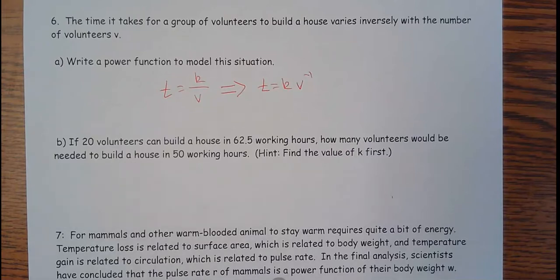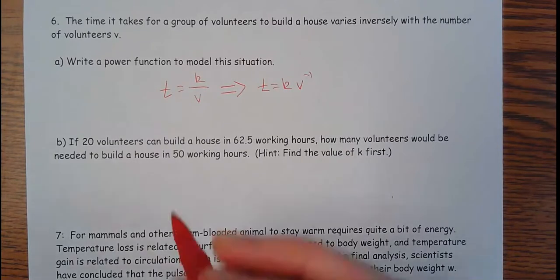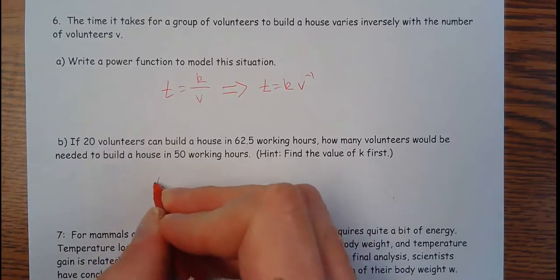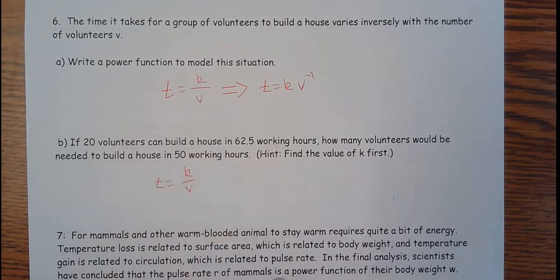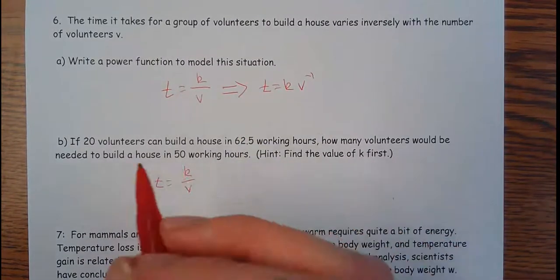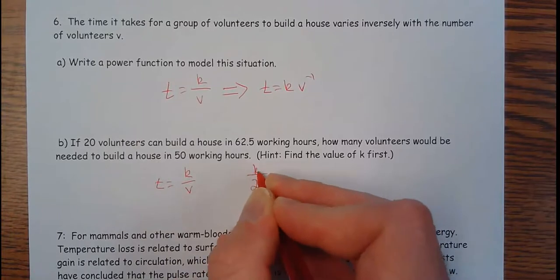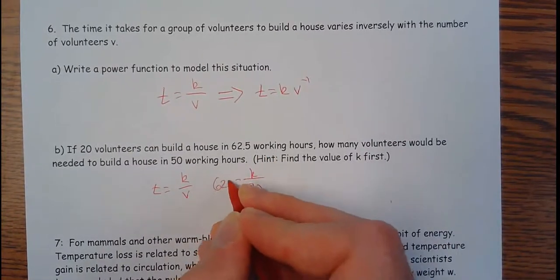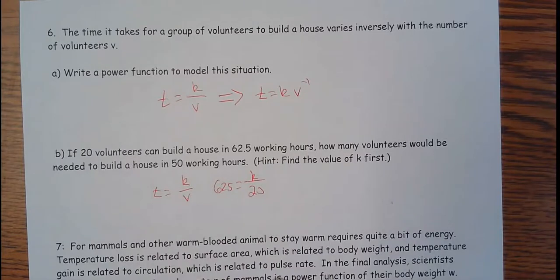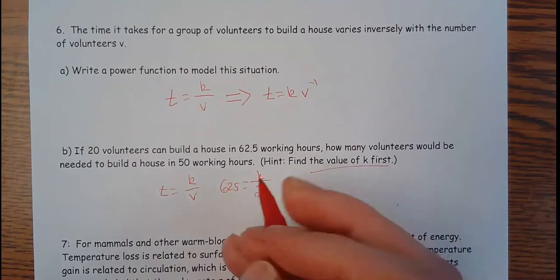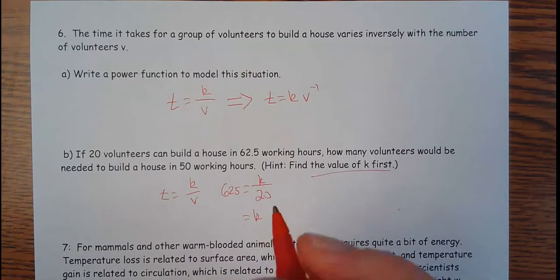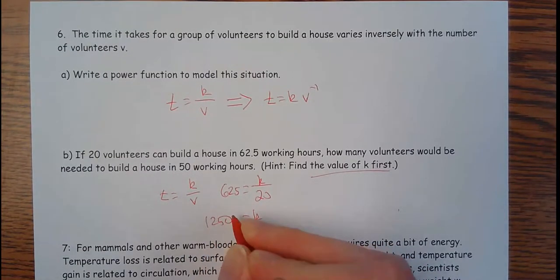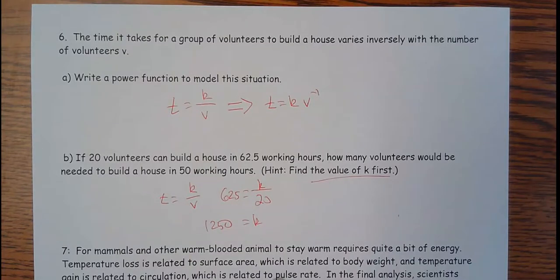Part b, if 20 volunteers can build a house in 62.5 hours, that's pretty fast to build a house. So I'm going to do t equals k divided by v. So the 20 volunteers, k divided by 20 equals 62.5. If I want to quickly just find my constant, I need to multiply those together. So k, in this case, is going to equal 1250. So it looks like there's about 1250 hours worth of work. If one person worked by themselves, it would take them about 1250 hours.